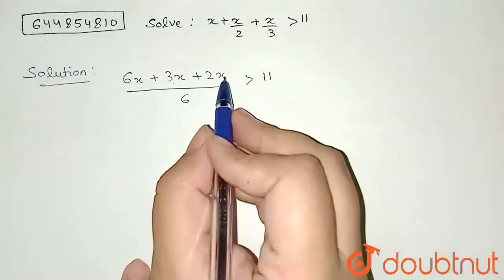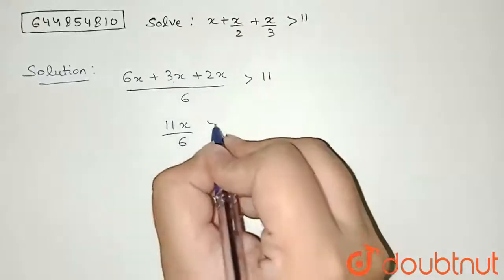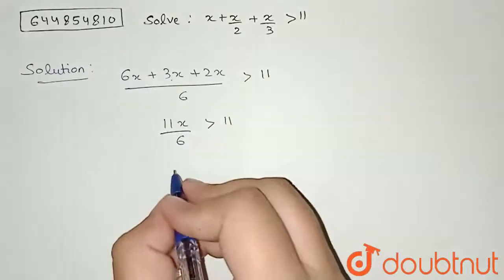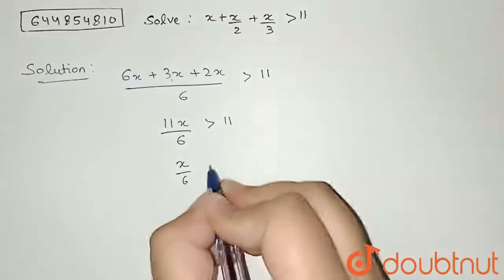is 9x, and 9x plus 2x will be 11x by 6 greater than 11. Now see, I have 11 here also, 11 here also, so these two will get cancelled. So I can write x by 6 greater